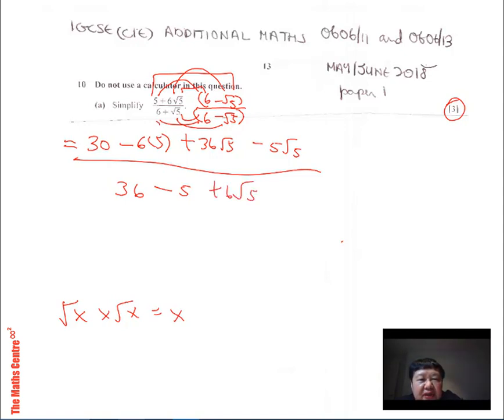For teaching sake, I'll show it here. Normally, I'll just throw it away, cancel it off. So 6 times negative root 5 is minus 6 root 5. You see?